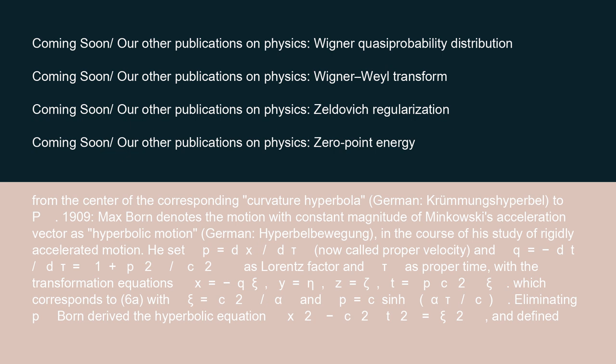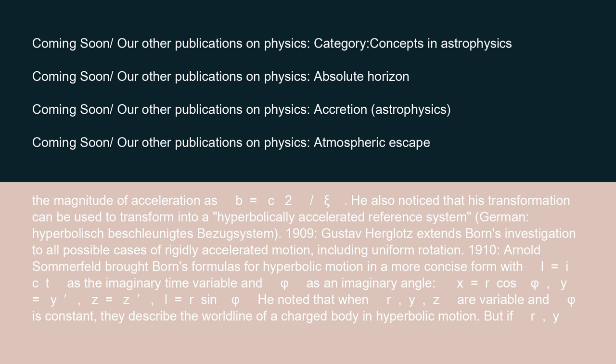1909: Max Born denoted the motion with constant magnitude of Minkowski's acceleration vector as hyperbolic motion (German: Hyperbelbewegung), in the course of his study of rigidly accelerated motion. He set p equals dx/dtau — now called proper velocity — and q equals −dt/dtau equals √(1 + p²/c²) as the Lorentz factor, and tau as proper time. With the transformation equations x equals −q·psi, y equals eta, z equals zeta, t equals p·c²·psi, corresponding to 6a with psi equals c²/alpha and p equals c·sin(alpha·tau/c), eliminating p, Born derived the hyperbolic equation x² − c²t² equals psi², and defined the magnitude of acceleration as b equals c²/psi. He also noticed that his transformation can be used to transform into a hyperbolically accelerated reference system.